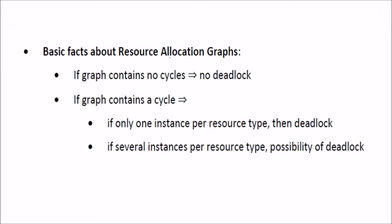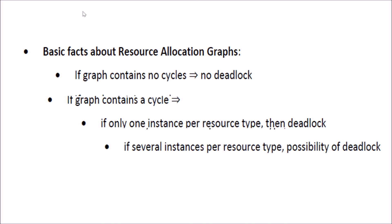The basic facts about this resource allocation graph is: if a graph contains no cycle, that means no deadlock. But if a graph does contain a cycle, if we have single instance of that resource, then the deadlock would be there. If we have multiple instances of resource type, possibility of deadlock is there.